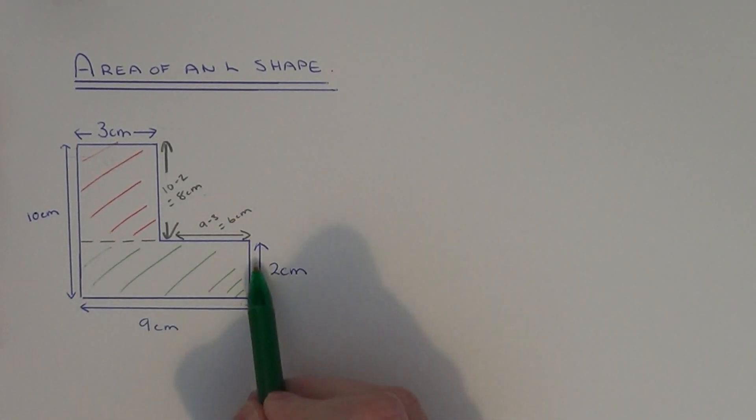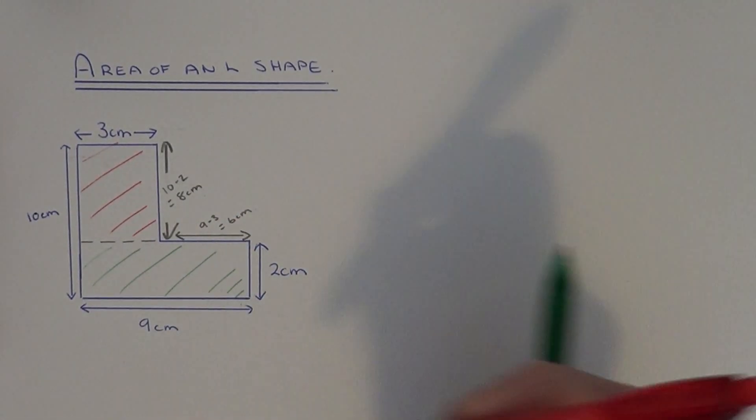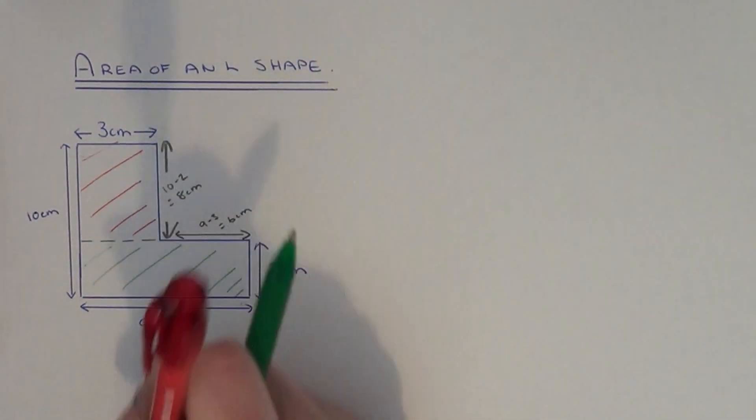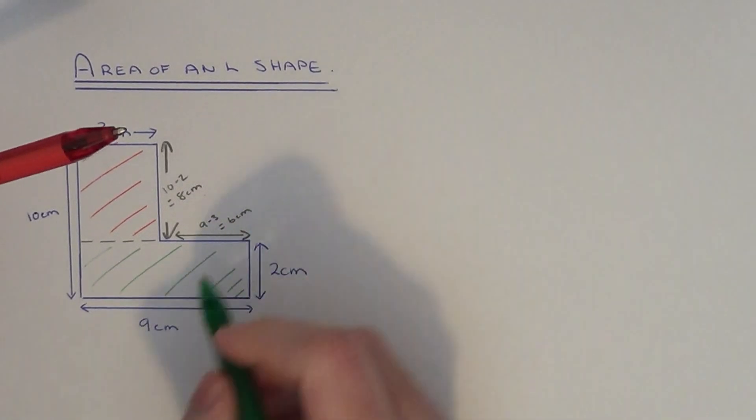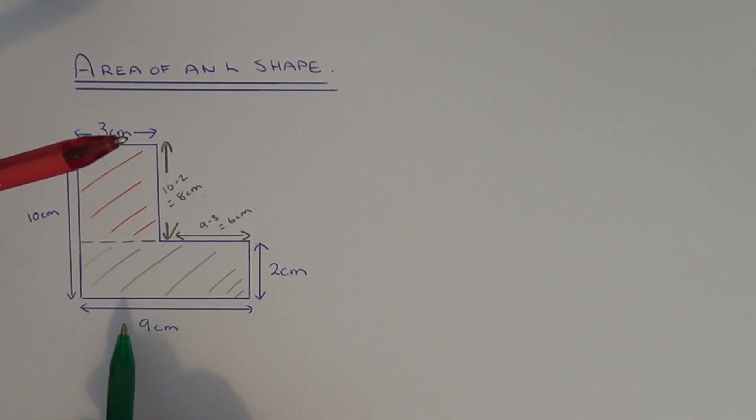We have to work out the area of this green rectangle and the area of this red rectangle. Let me do the green one first. To work out the area of this green rectangle we have to multiply the two side lengths together. You need to be careful which two sides you pick.